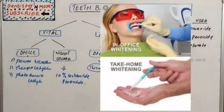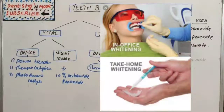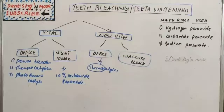Night guard bleaching is indicated in superficial enamel discoloration, mild yellow discoloration, brown fluorosis discoloration, and age-related discoloration. It is contraindicated in severe enamel loss, hypersensitivity, bruxism, caries, defective coronal restoration, or any type of allergy.